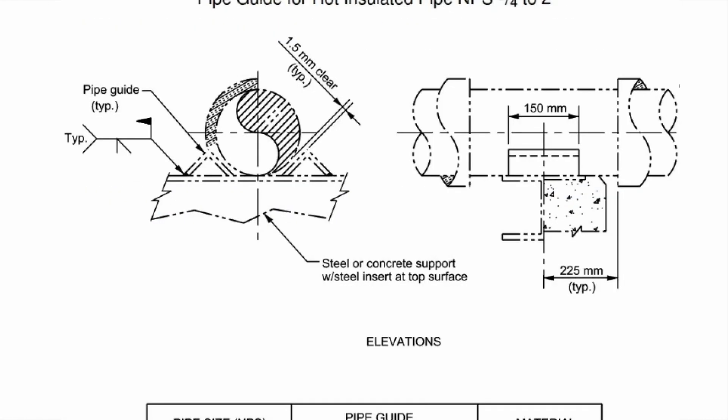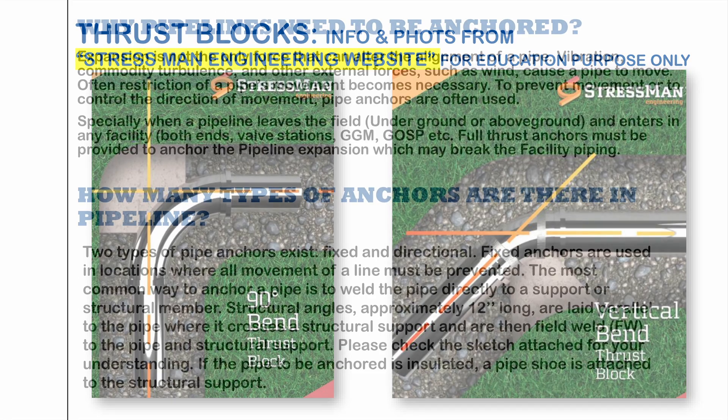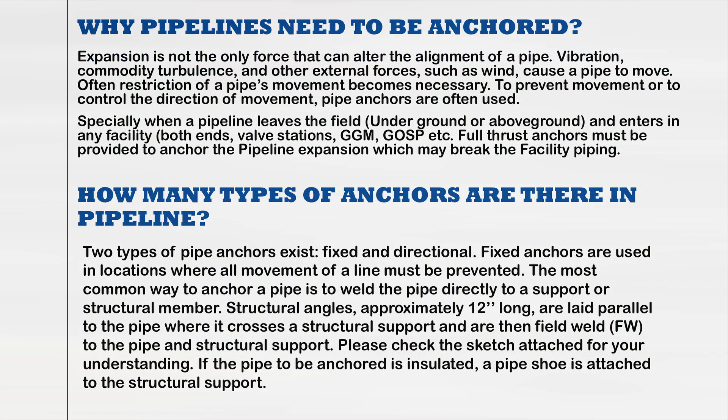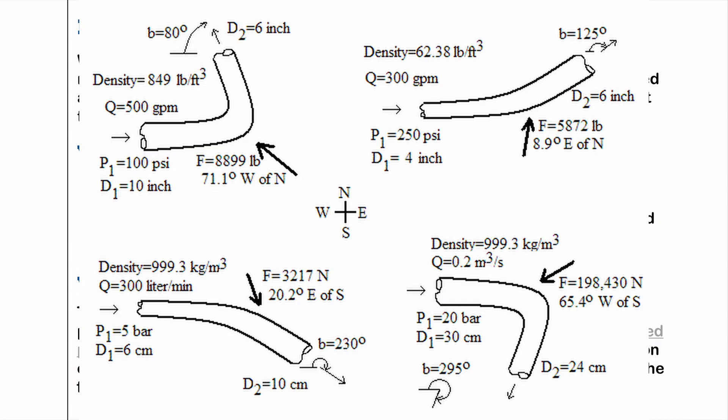How many types of anchors are there in a pipeline? Two types of pipe anchors exist: fixed and directional. Fixed anchors are used in locations where all movement of a line must be prevented. The most common way to anchor a pipe is to weld the pipe directly to a support or structural member. Structural angles approximately 12 inches long are laid parallel to the pipe where it crosses a structural support, then field welded to the pipe and structural support. Please check the sketch attached for your understanding. If the pipe to be anchored is insulated, a pipe shoe is attached to the structural support.